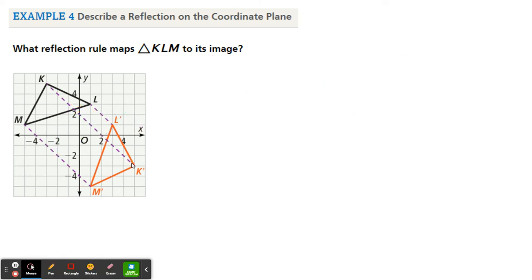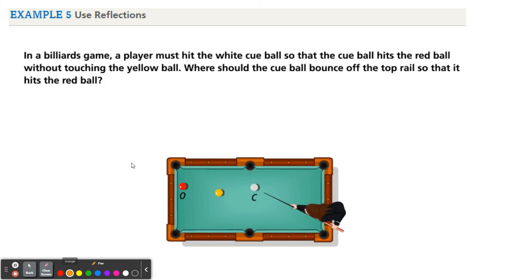Okay, last but not least, a classic problem here. So this one says that in a billiards game, a player must hit the white cue ball so that the cue ball hits the red ball without touching the yellow ball. Where should the cue ball bounce off the rail so that it hits the red ball?